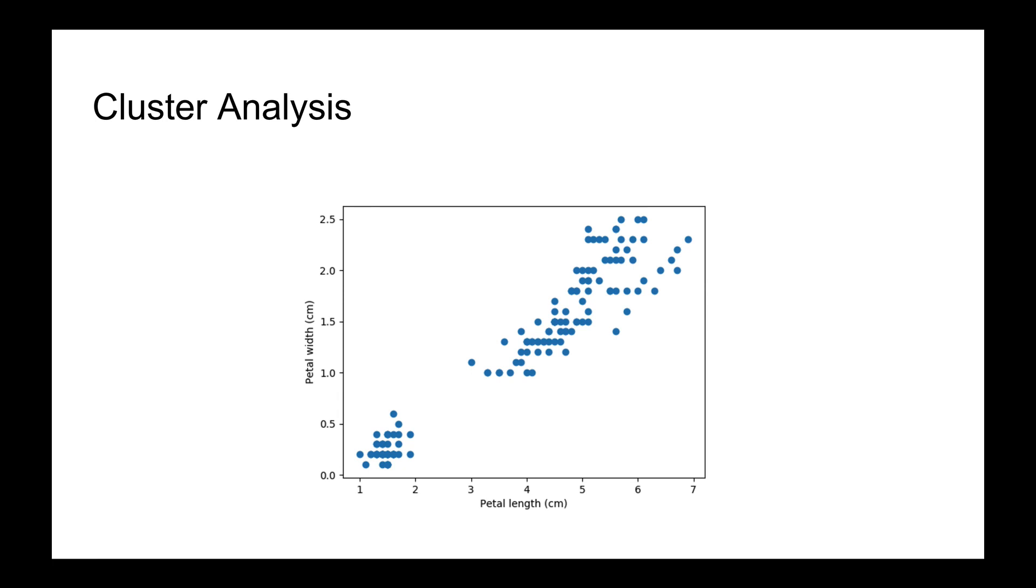And actually, in some cases, we don't need to specify the number of clusters. In fact, some algorithms, such as DBSCAN, are actually smart enough to be able to figure out how many clusters are based entirely on the data. But algorithms like k-means will actually need to specify how many clusters that we have. And so, for example,